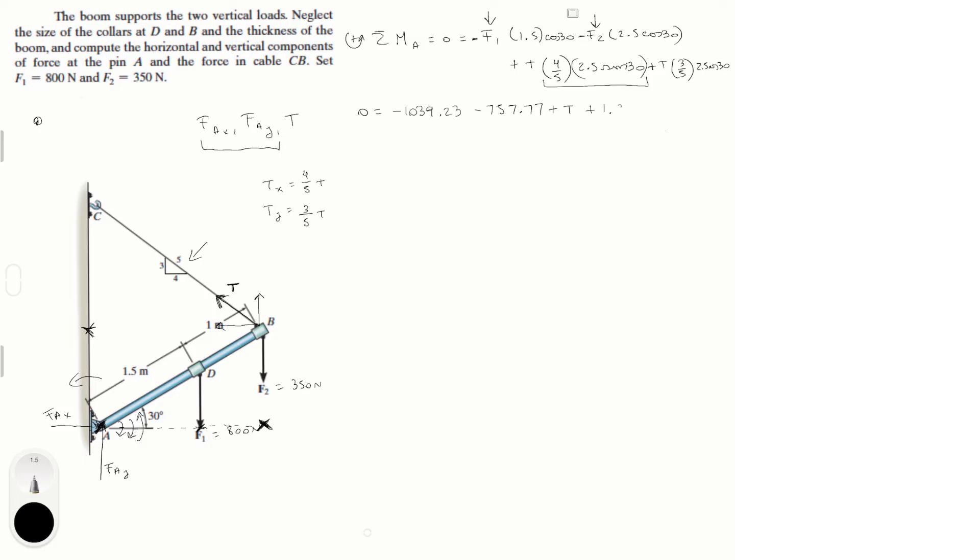Plus T, because surprisingly enough this is equal to 1 if you plug it into your calculator. Plus 1.299, which is 1.3 T, which is this term right here. So add this all up and you should get 2.3 T is equal to 1797. T should be equal to 781.3 newtons.